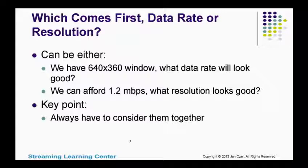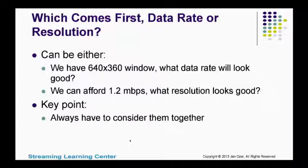One question you hear a lot: what comes first, the data rate or the resolution? That can happen either way. Sometimes the web person will say we've got a 640 by 360 window — what data rate do we need? Sometimes you hear we can afford 1.2 megabits per second per stream — what resolution will look good? The key point is you always have to consider them together. You can't talk about data rate without knowing the resolution, because 1.2 megabits per second looks great for 640 by 360 but awful for 1080p at 1920 by 1080.